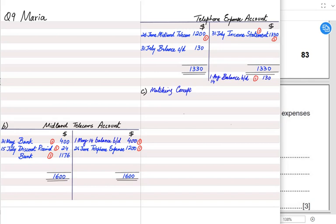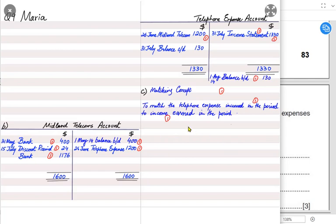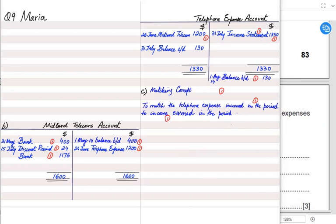If the income belongs to this year it should be recorded this year — whether or not payment has been received. If the expense belongs to this year it shall be recorded this year — whether or not it has been paid. In the examination, write: 'to match the telephone expense incurred in the period to income earned in the period.' In the next lesson we will cover accrued and prepaid income — what it means, how to make the account, and how to adjust the financial statements.